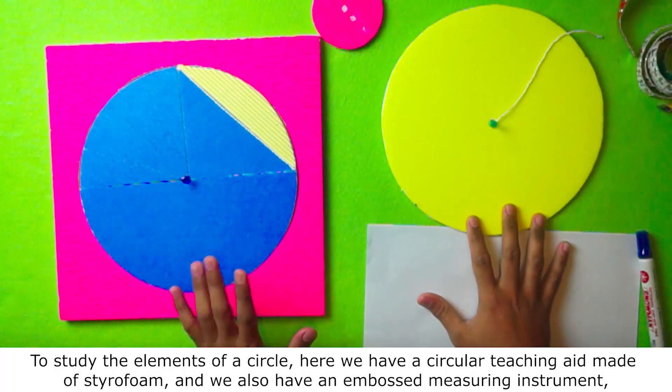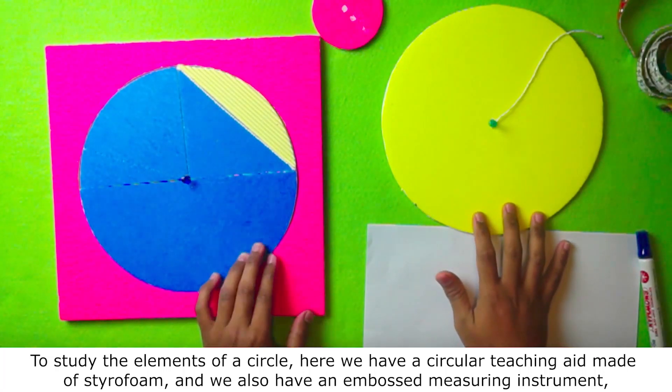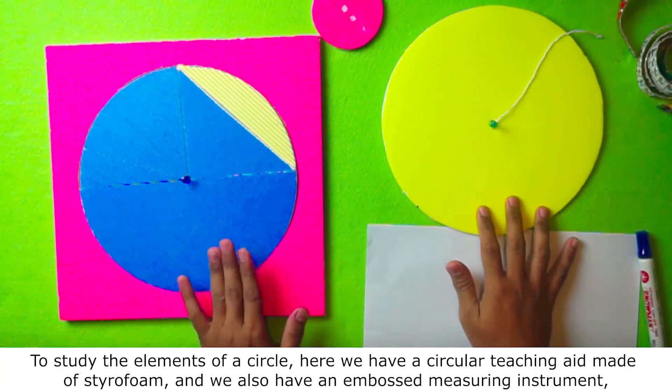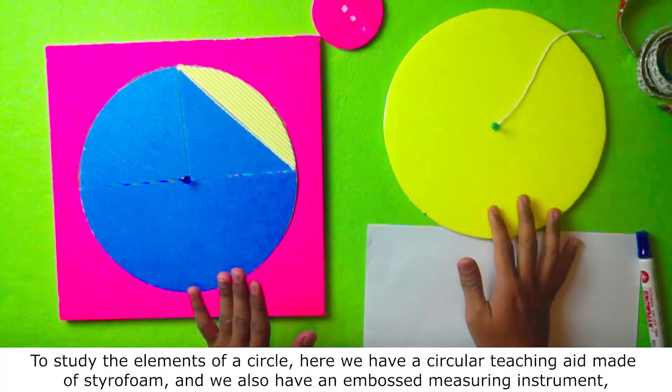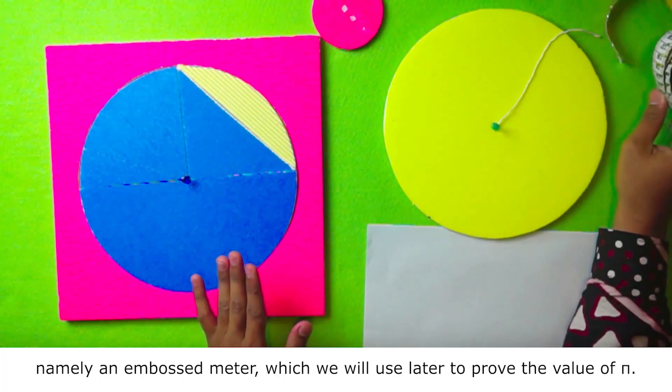To study the elements of a circle, here we have a circular teaching aid made of styrofoam. And we also have an embossed measuring instrument, namely an embossed meter, which we will use later to prove the value of pi.